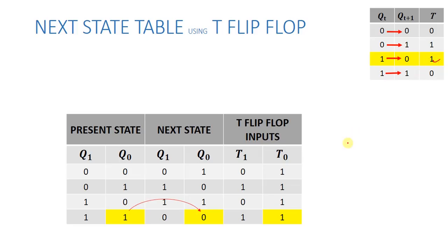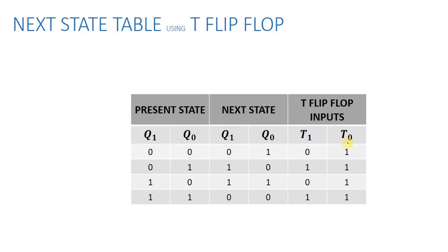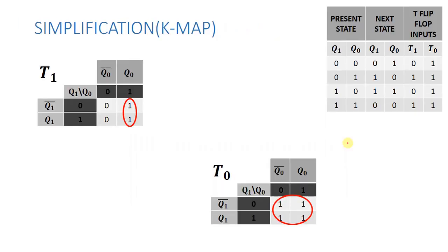This is our table and now we will extract expressions. This is T1. If we plot it on K-map for T1, we look at the values. 0, 1 is one and 1, 1 is one.